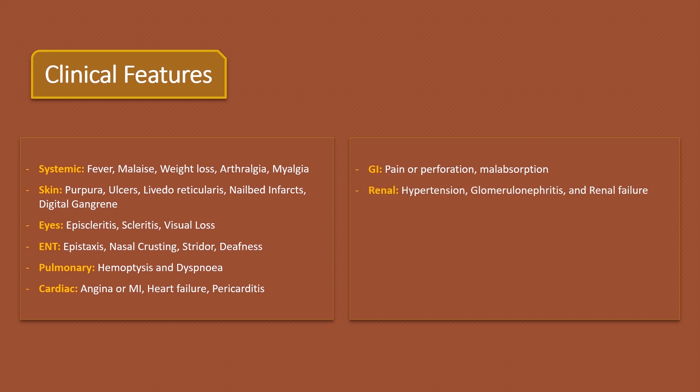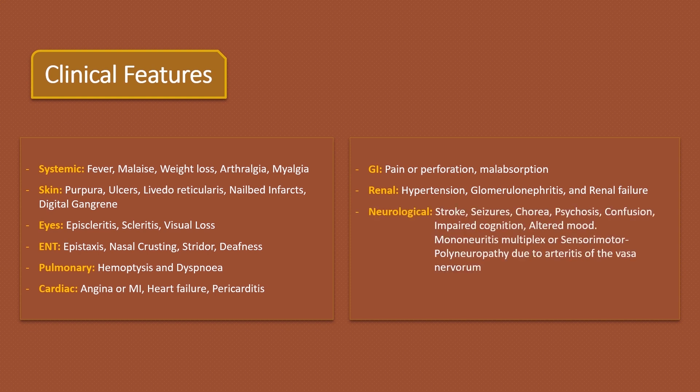Renal involvement leads to hypertension, glomerulonephritis, and renal failure. Neurological involvement may present with stroke, seizures, psychosis, confusion, impaired cognition, or altered mood. If there is involvement of the vasa nervorum — the blood vessels supplying blood to the nerves — the patient may develop mononeuritis multiplex or sensory-motor polyneuropathy.